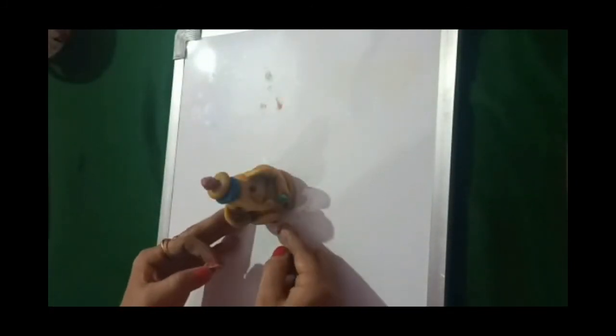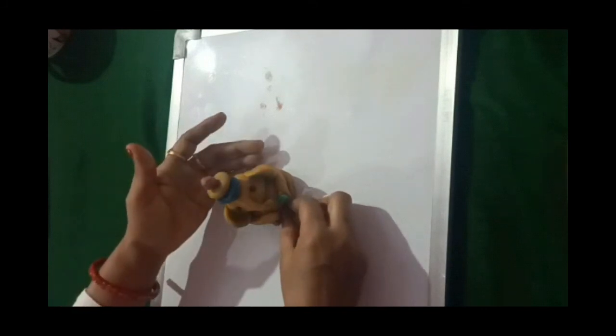Now I will make a cylindrical shape like this and will use it as a leg. So the Lord Ganesha, I have made the activity. Now you can make like this as I have done. Thank you.